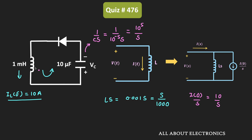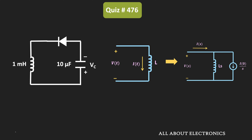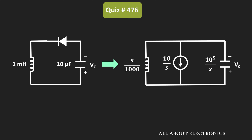In this loop, when current flows in the anti-clockwise direction, the diode will get forward biased. In the forward biased condition it will act as a short circuit. So in the equivalent S-domain representation, this diode can be represented as a short circuit. This is how the equivalent S-domain circuit looks.